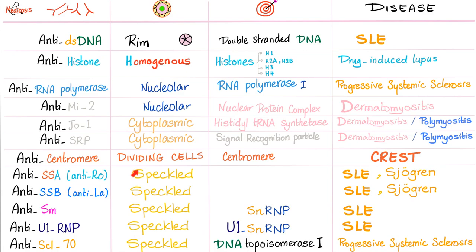Now let's talk about the speckled pattern. A tip: speckled is seen in SLE and Sjogren syndrome. Anti-SSA (anti-Ro) — think AROBILA — for lupus and Sjogren. Anti-Smith: lupus. Anti-U1-RNP: lupus and mixed connective tissue disease. Anti-Scl-70, which targets DNA topoisomerase 1: progressive systemic sclerosis, not CREST.